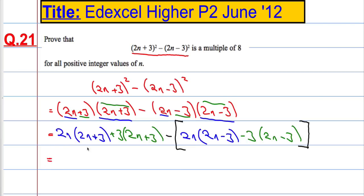So that equals, well, 2n times 2n is 4n². 2n times 3 is 6n. Then 3 times 2n is 6n, and 3 times 3 is 9. We're just distributing the 2n across the brackets and then the 3 across the brackets.